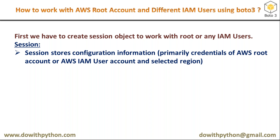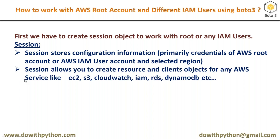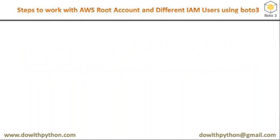Once you have your session object, you can create a resource or client object for any AWS service. There are almost 142 services in AWS categorized into 19 groups. To work with any of these services, you create either a resource or client object. Once you have that client or resource object, you can implement the rest of your code based on your requirement.